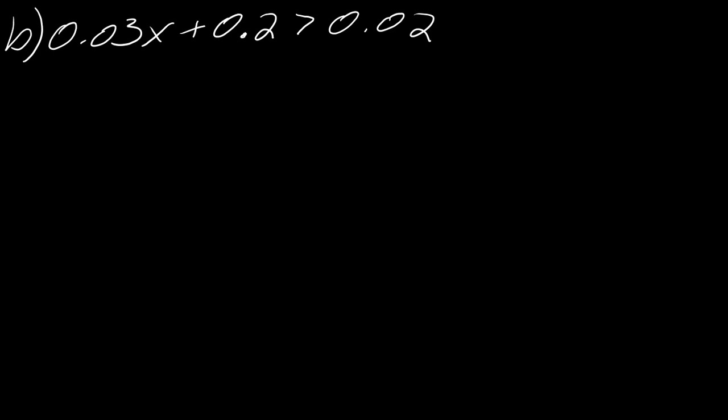Okay, so this one is a decimal problem. So I'm just going to go ahead and use the technique. But if you need a refresher, there will be a link to that in the description. So the idea behind this is that you're just looking for what is the maximum number of decimal spots that you see - 2 in this case. So I'm going to move all of the decimals two spots over. So move this over 2, I'm going to move this over 2, and move this over 2. So then this becomes 3x plus 20 is greater than 2.